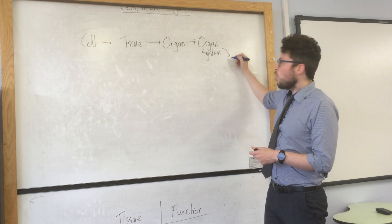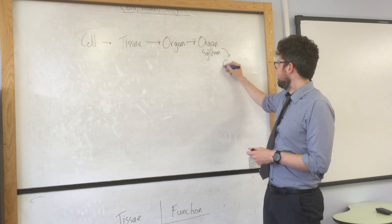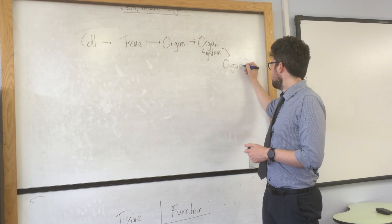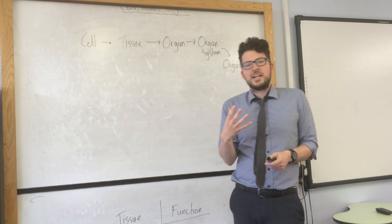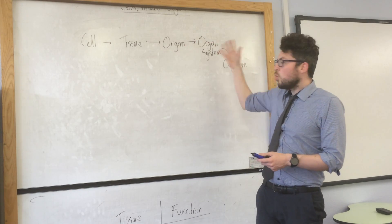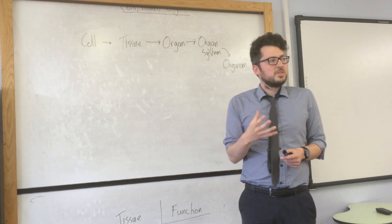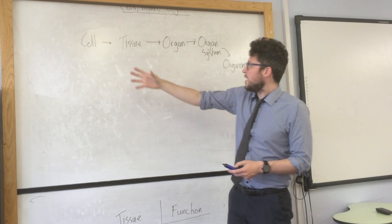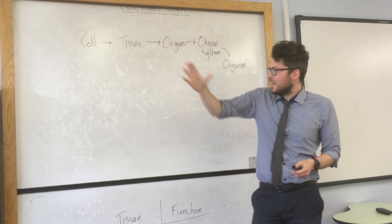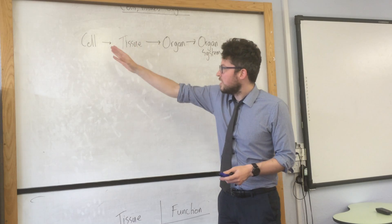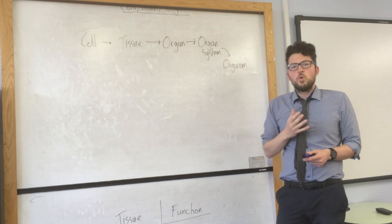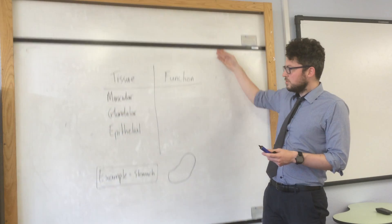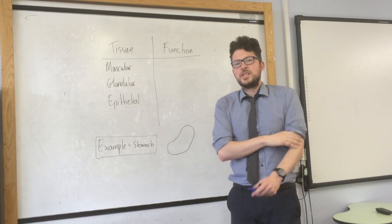From there, we would make an organism — just a living thing like you or me, with a group of different organ systems working together to keep it alive. So that's the basic structure of any living thing, going from cell through to the whole organism.